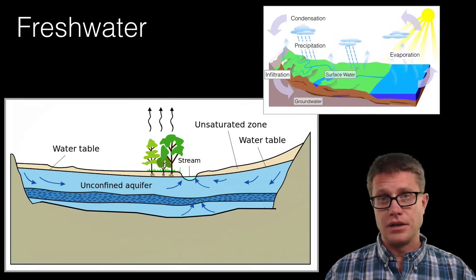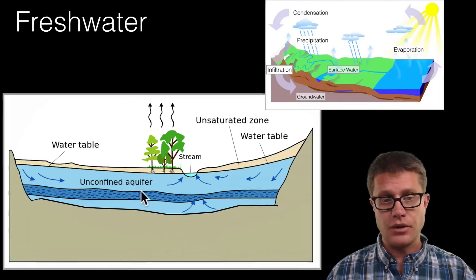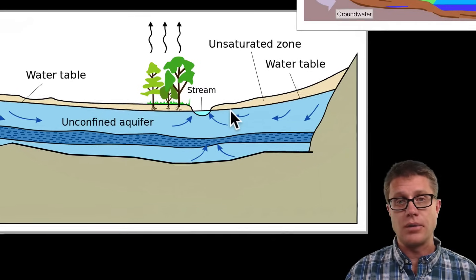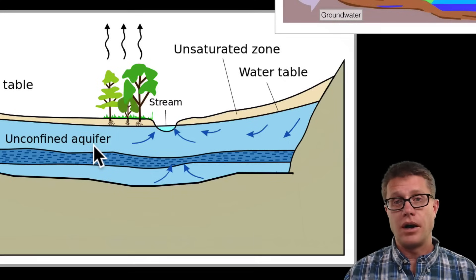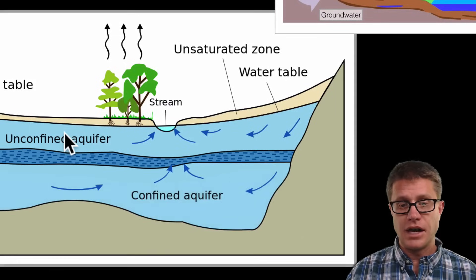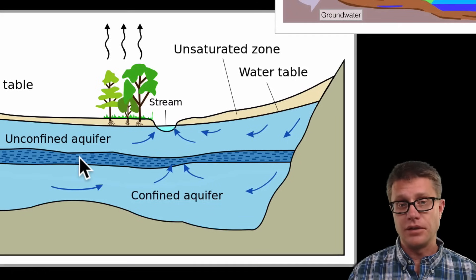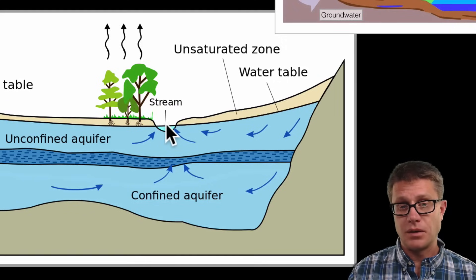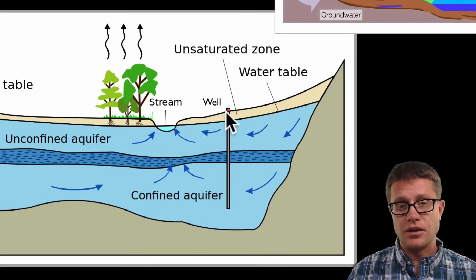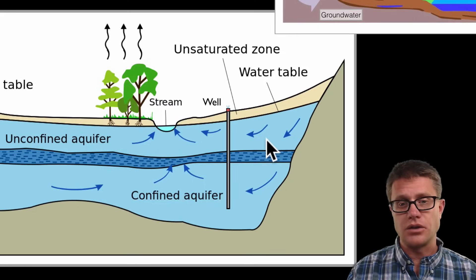Fresh water can be divided into surface water and ground water. Looking at the sides of a stream, you can see the water table in the ground water — if you dig a hole it will fill in with water. An unconfined aquifer allows water to move between the surface and the aquifer itself. Digging deeper, you could find a confined aquifer, which is stuck between impermeable rock above and below. To access ground water we can dig a well, and sometimes we have an artesian well where gravity or pressure causes the water to come out naturally.